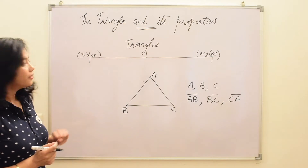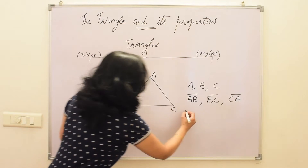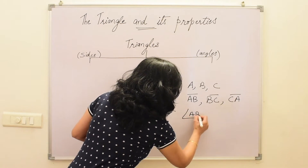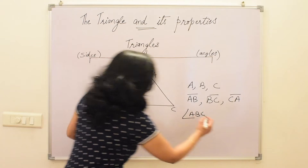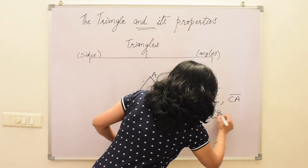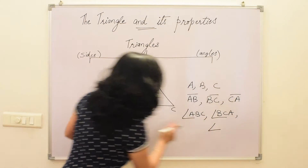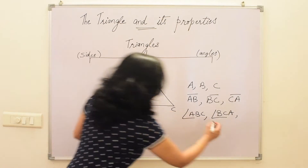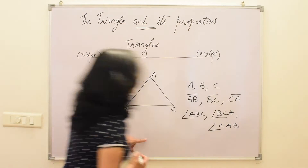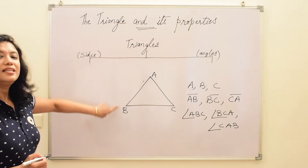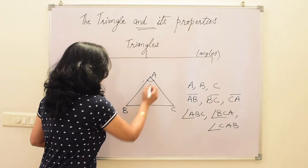Now, what are the three angles? The three angles are angle ABC, angle BCA, and angle CAB. So these are the three angles of the triangle.